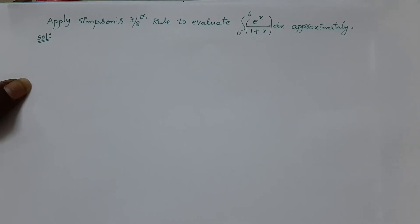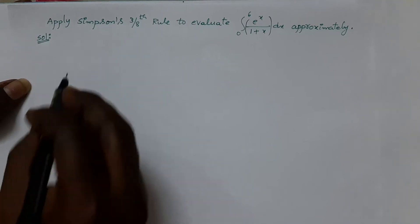Already we know that we can apply Simpson's 3/8th rule only when the number of subintervals is a multiple of 3. So, we should divide the range into 3 equal parts, otherwise 6 equal parts, otherwise 9 equal parts, otherwise 12 equal parts, etc. So, it is better to let us divide the range into 6 equal parts.